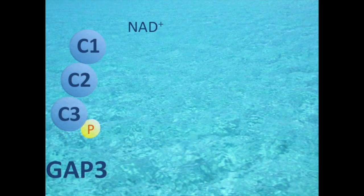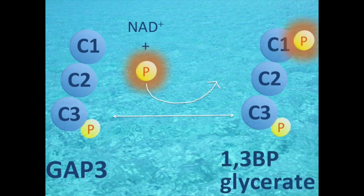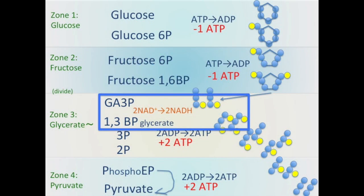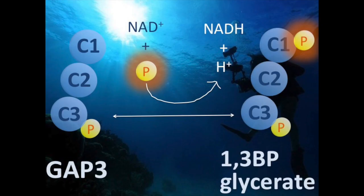Glyceride island: the phosphate is oxidized and gets an inorganic phosphate. Please note, it's not from ATP, but an inorganic phosphate. All other phosphorylation reactions use ATP or ADP. Don't forget: NADH is produced in this reaction.